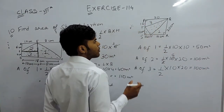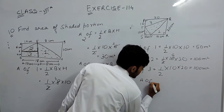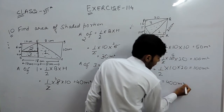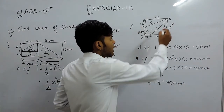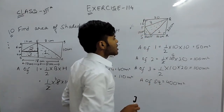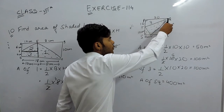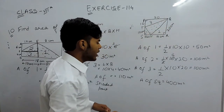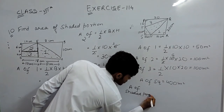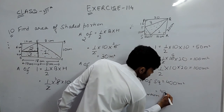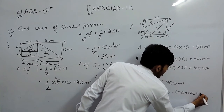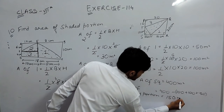Now we have to find the area of the shaded portion. First of all we will find the area of the square. Area of square is equal to side into side, that is 20 into 20, which equals 400 square centimeters. We found the area of the complete square, and then we found the area of the three triangular portions. So the area of the shaded portion is equal to 400 minus (100 plus 100 plus 50), which equals 150 square centimeters.